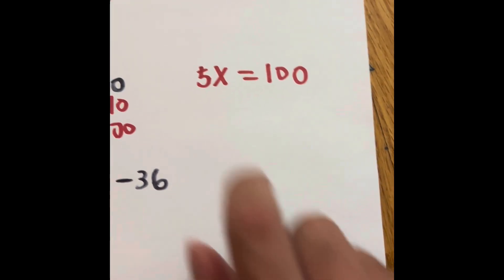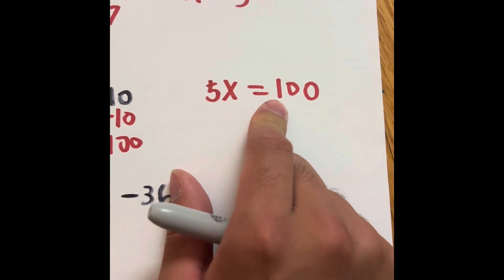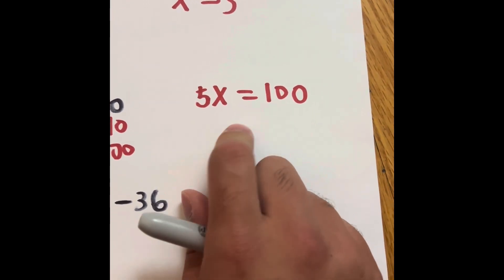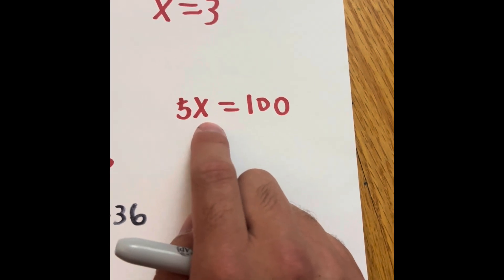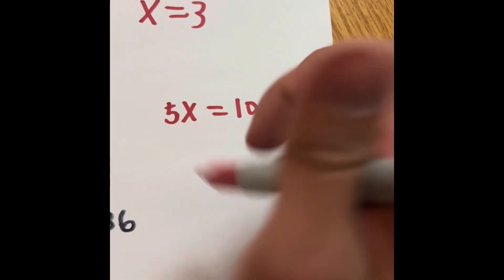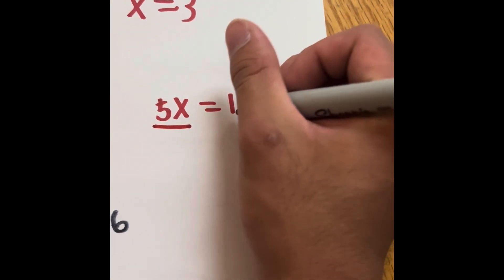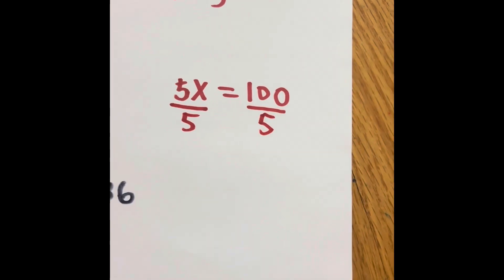Right here, 5 multiplied by what kind of number gives us 100? If the problem is multiplying and we want to find the missing data, we have to reverse the problem, so we divide. We divide by 5 and divide by 5 on both sides.